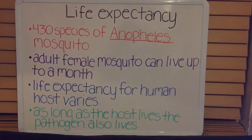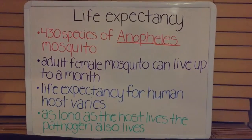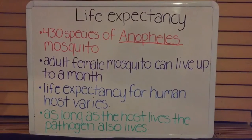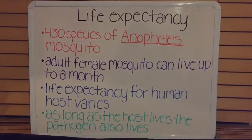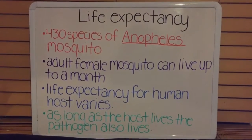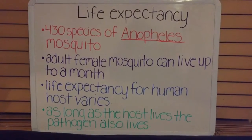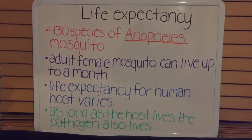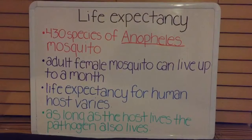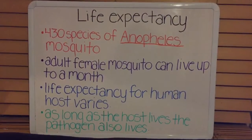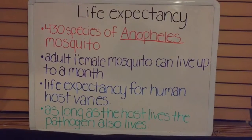Life expectancy of the mosquito, the human, and the pathogen. When the pathogen infects the host, the longer the host lives, the longer the pathogen lives within the host. There are approximately 430 species of Anopheles mosquitoes, but only 30 to 40 of them transmit malaria. The adult female Anopheles mosquito can live up to a month. When the P. falciparum parasite infects the mosquito, the pathogen replicates but nothing physically happens to the Anopheles mosquito. In the human body, the parasite starts to immediately take over the body and its immune system. The life expectancy in the human host depends on how long the body's immune response can tolerate the pathogen. The Plasmodium falciparum parasite needs a host in order to stay alive; when the host dies, the pathogen can no longer survive.